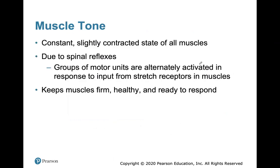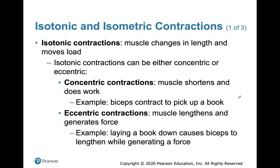Muscle tone is a constant, slightly contracted state of all muscles, due to spinal reflexes where groups of motor units are alternatively activated in response to input from stretch receptors. This keeps all muscles firm, healthy, and ready to respond. As part of isotonic contraction, the muscle changes in length and moves a load. Isotonic contractions can be concentric — the muscle shortens and does work, like your biceps picking up a book — or eccentric — the muscle lengthens and generates force, like laying the book down, causing the biceps to lengthen.